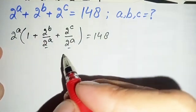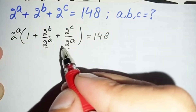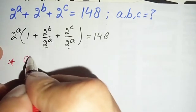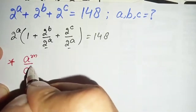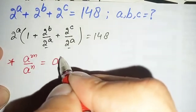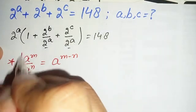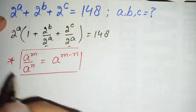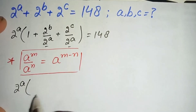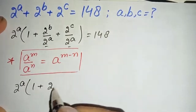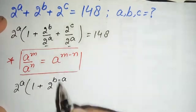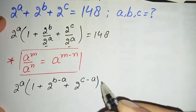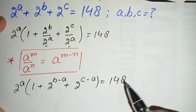Next, we will use the exponential math property: x raised to power m divided by x raised to power n can also be written as x raised to power m minus n. Applying this property to those two terms, the equation becomes 2 raised to power a, times 1 plus 2 raised to power (b minus a) plus 2 raised to power (c minus a), equals 148.